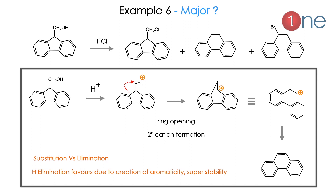The sixth example is an aromaticity-driven reaction. The starting material is a naphthalene-fused system with a CH2OH group. Three possible products exist: simple substitution of OH with Cl, ring opening with Br attached, or a naphthalene system. Writing the mechanism: cation forms first, then the methylene group migrates and forms another cation. Instead of chlorine substitution, if hydrogen is eliminated, aromaticity is achieved. Since aromaticity is a strong stabilizing factor, elimination is favored over substitution. The hydrogen is eliminated and the aromatic resin product forms.